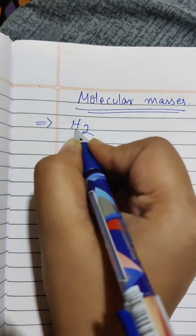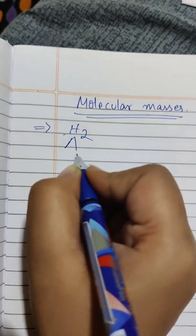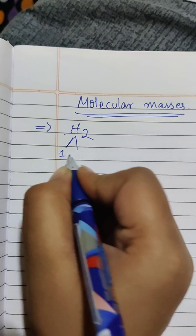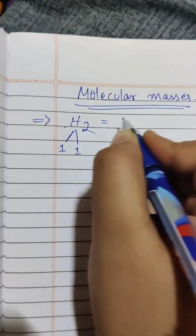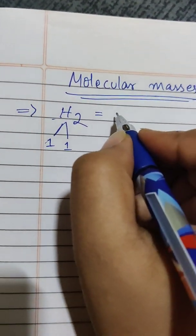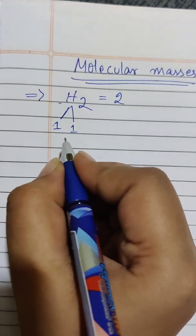First, H2, hydrogen. Two atoms of hydrogen. We will be adding the masses of the element.